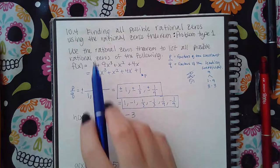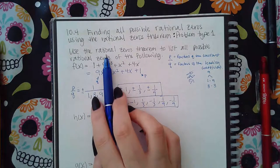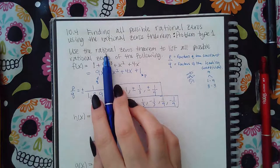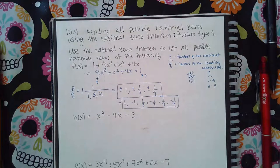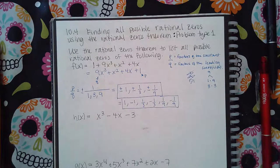And not a real zero, but a rational zero. Rational zero means either a whole number or a fraction. No square roots, no imaginaries, nothing like that, just the rational ones.